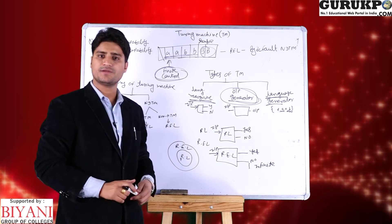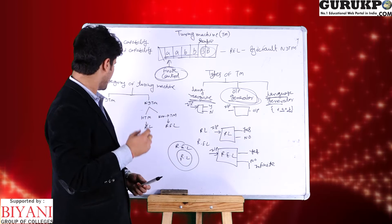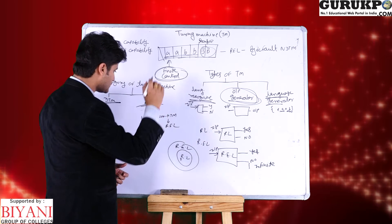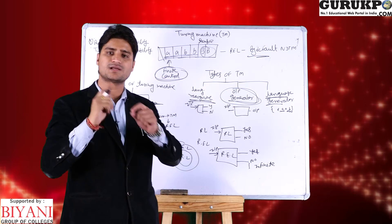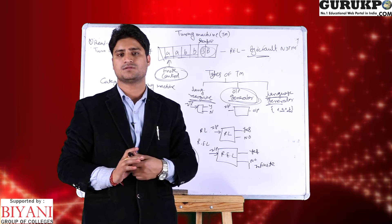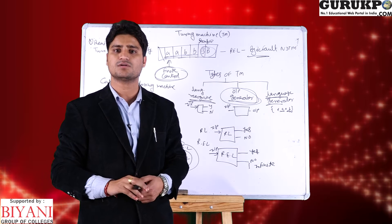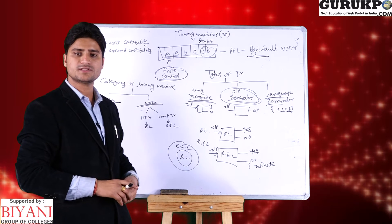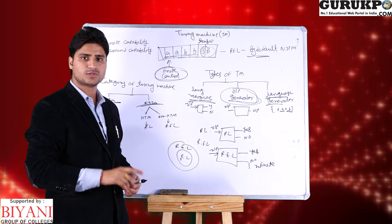Now, the categories of Turing machine: we have two categories — deterministic Turing machine (DTM) and non-deterministic Turing machine (NDTM). By default, if you are constructing a Turing machine, that means you are constructing a non-deterministic Turing machine. To convert this non-deterministic to deterministic, we cannot construct a deterministic Turing machine. So by default we construct a non-deterministic Turing machine.